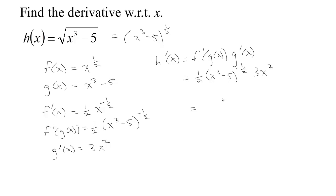Now if we wanted to, we could write this as a fraction. Upstairs we've got 3x squared. Because of the negative exponent, that's actually something to the one half power downstairs, and something to the one half power is the square root. So we've got this 2 down here and then the square root of x cubed minus 5 — just another way of writing it. The important point is that we can use the chain rule to find that derivative.